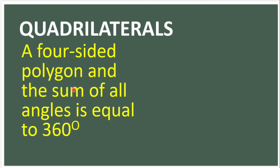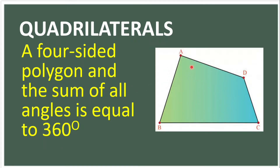A quadrilateral is a four-sided polygon and the sum of all angles is equal to 360 degrees. We can see here an example of a quadrilateral. If we add angle A, angle D, angle C, and angle B, that is equal to 360 degrees.